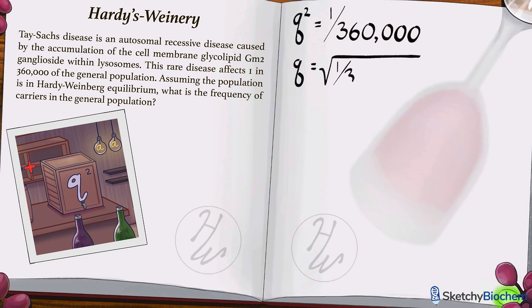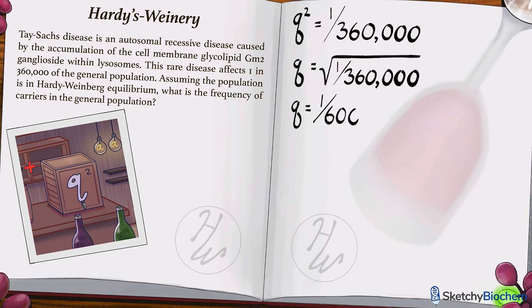To find Q, we take the square root of Q squared. The square root of 1 over 360,000 is 1 over 600. From here, we can plug our value for Q into the equation P plus Q equals 1. That gives us a P value of 599 over 600. Cool — we have both P and Q as well as Q squared.